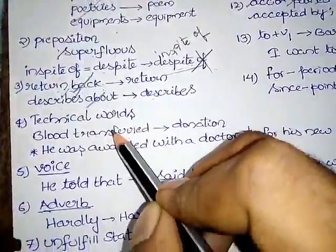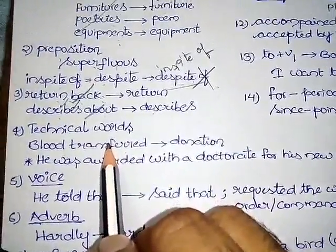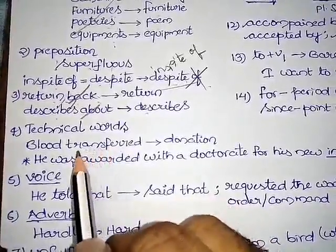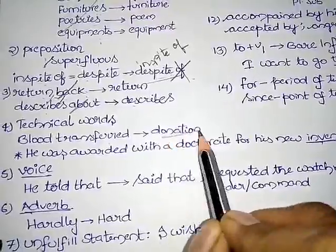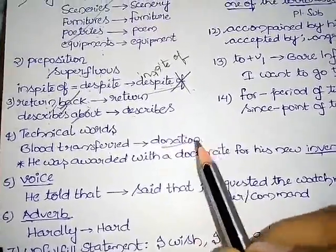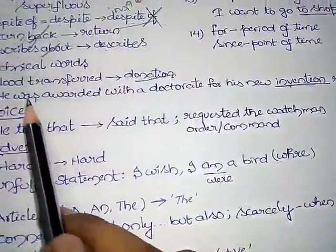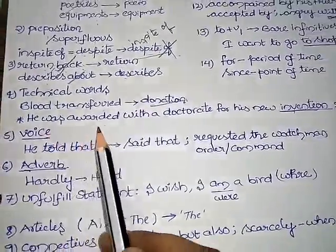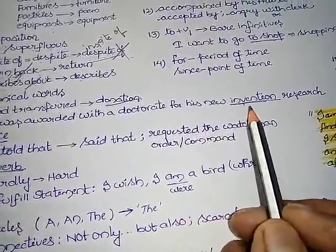Coming to technical words. There is another possibility for giving errors in the form of technical words. For example, blood is transferred is wrong. It should be like donation. We can donate the blood. To clarify this, I want to give one more example. Let's see, it is one of the previous exam.